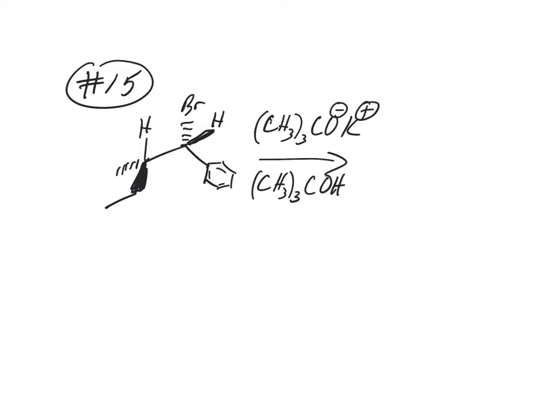First question we ask ourselves: this is E2, E1, SN1, SN2. What kind of alkyl halide do we have? Primary, secondary, tertiary? Secondary. So that doesn't eliminate anybody. What kind of nucleophile do we have? Reactive or less reactive? It's reactive, so that eliminates E1 and SN1.